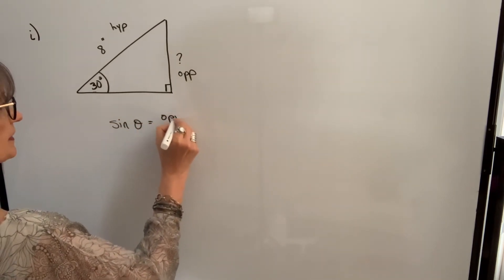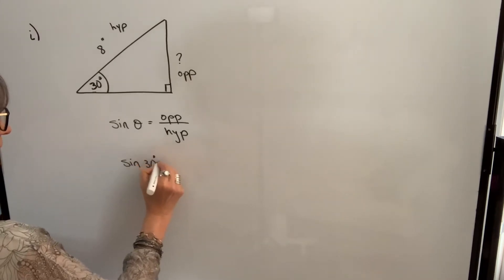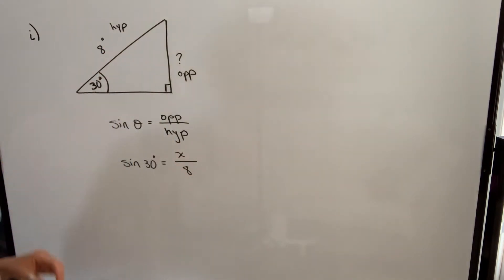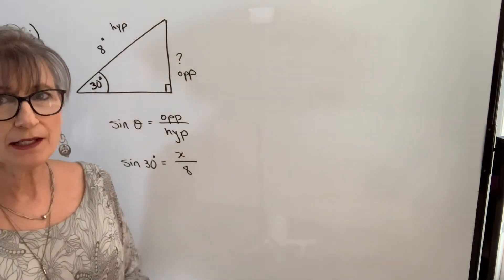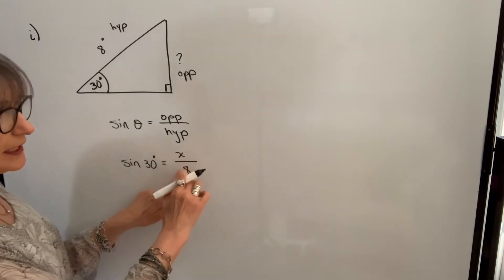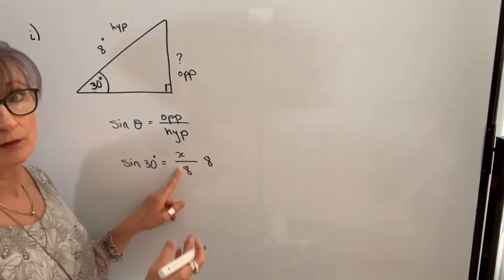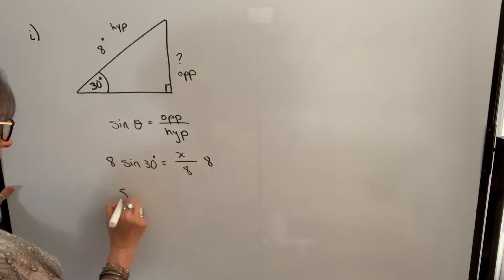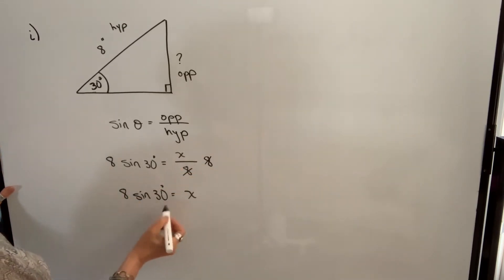The sine of our angle will be equal to the opposite side divided by the hypotenuse, and we plug in the values that we know. The angle is 30 degrees; the opposite side we don't know, so we can call it X; the hypotenuse is 8 inches. To isolate X, I need to get rid of this 8 that's being divided into X. The opposite of division is multiplication, so if I multiply by 8, that cancels. Remember, whatever you do to one side of an equation, you have to do the same to the other side — so I multiply both sides by 8, and I get X by itself.